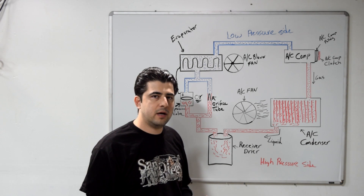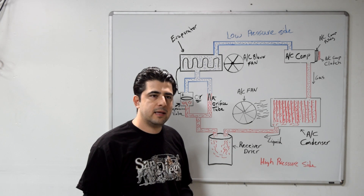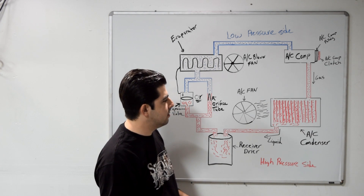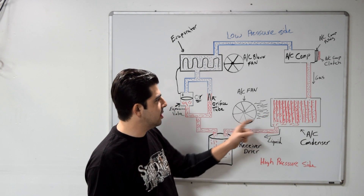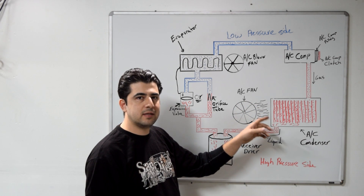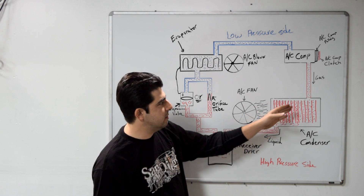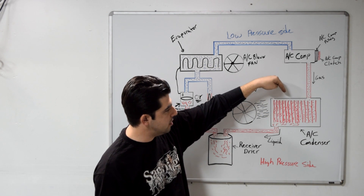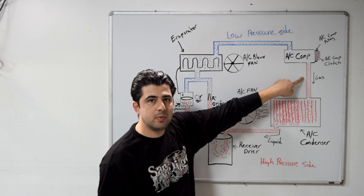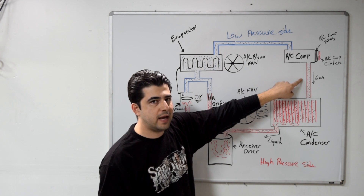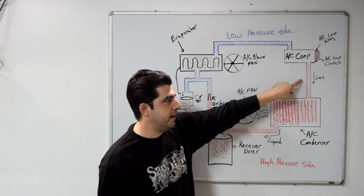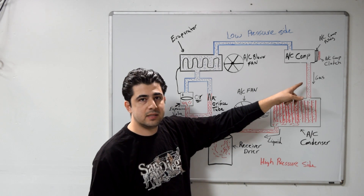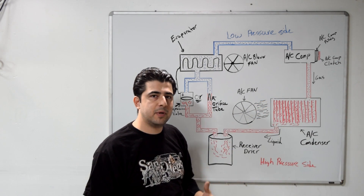Just get in your car, turn it on, turn your AC on, set it to max, and wait a couple of minutes. Then go around and touch the different AC lines after each component and try to detect their temperature difference. Starting at the AC compressor — if you put your hand on the line coming out of the compressor going to the AC condenser, this line should be very warm to the touch, about 100 to 120 degrees Fahrenheit. That's because compressing the refrigerant gas causes its temperature to rise.